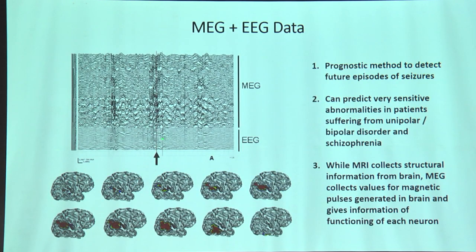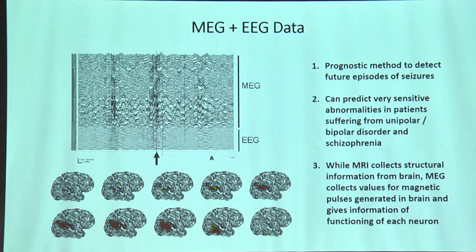With this single-neuron electromagnetic flux, the actual data looks like this. In EEG alone you see tiny perturbations prognostic to episodes of seizures and epilepsy. Combining it with MEG gives better resolution, pinpointing the exact neuron responsible for the disorder. It is being used as a prognostic measure and is now applied to detect unipolar, bipolar disorders, and schizophrenia with much greater accuracy.